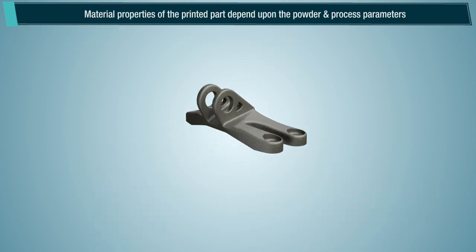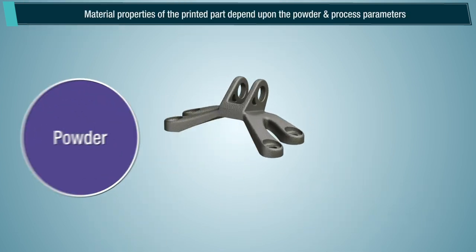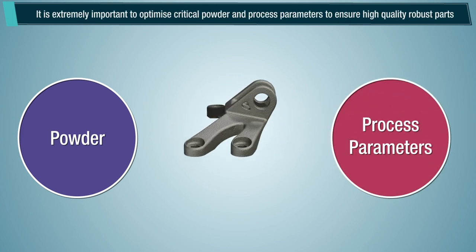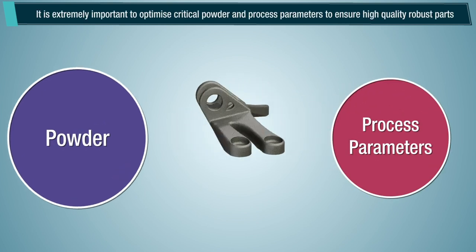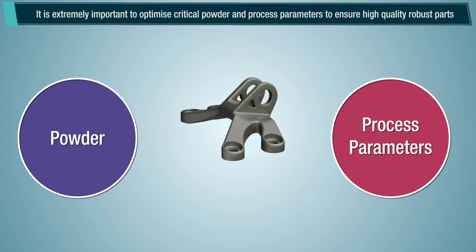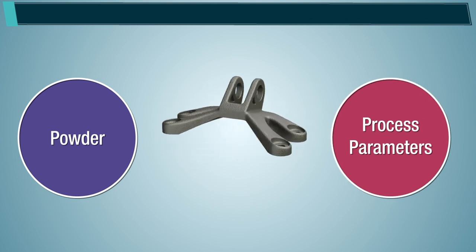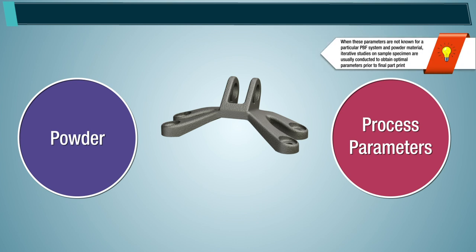Material properties of the printed part depend upon the powder and process parameters. It is extremely important to optimize critical powder and process parameters to ensure high-quality robust parts. When these parameters are not known for a particular PBF system and powder material, iterative studies on sample specimens are usually conducted to obtain optimal parameters prior to final part printing.